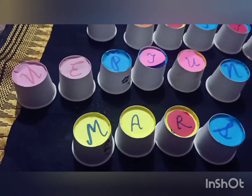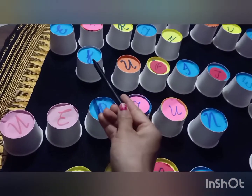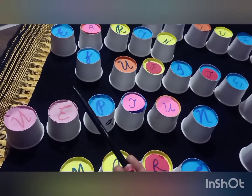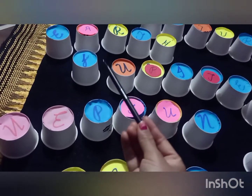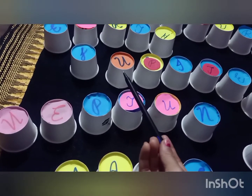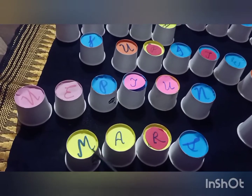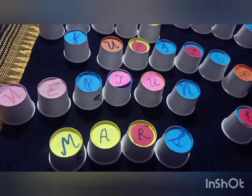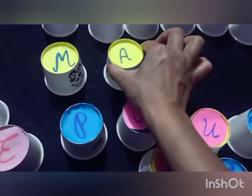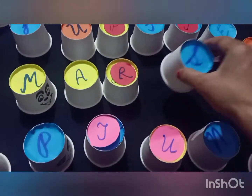Now we have three planets left: Mars, Neptune, and Saturn. We will check after J. Is there any planet with the letter K? No. L? No. M? Yes, we have Mars — M-A-R-S. So after Jupiter comes Mars.